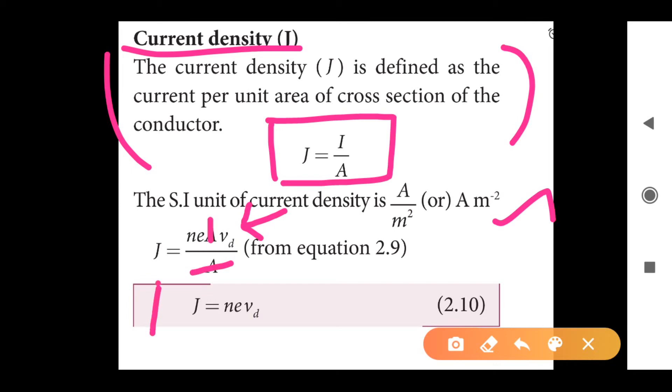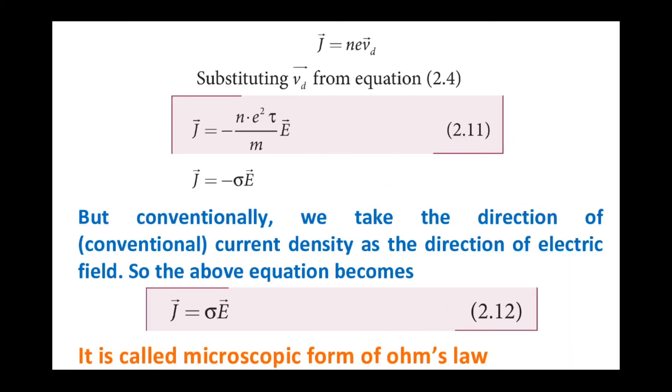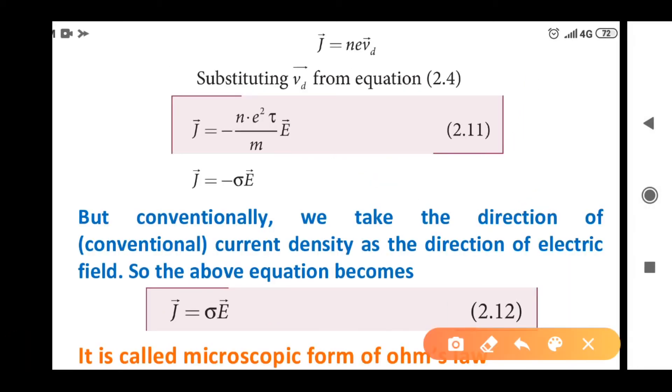Current density is derived from the number of electrons.